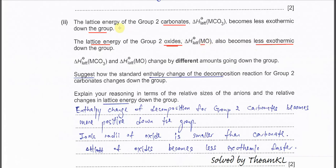So both lattice energies for the carbonate and the oxide become less exothermic, but they change by different amounts. Next, the question asks how the standard enthalpy change of the decomposition reactions for Group 2 carbonates changes down the group.